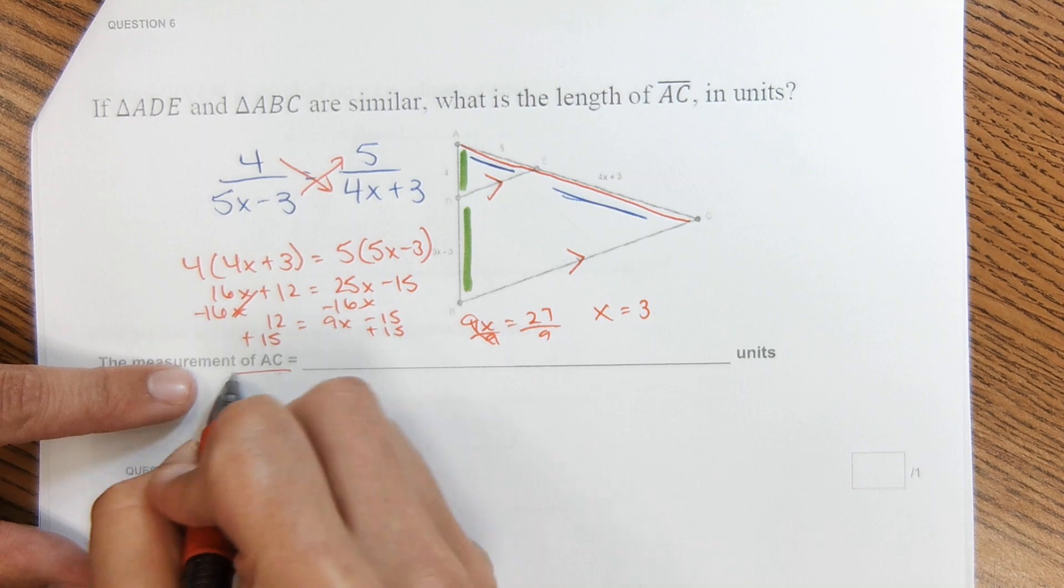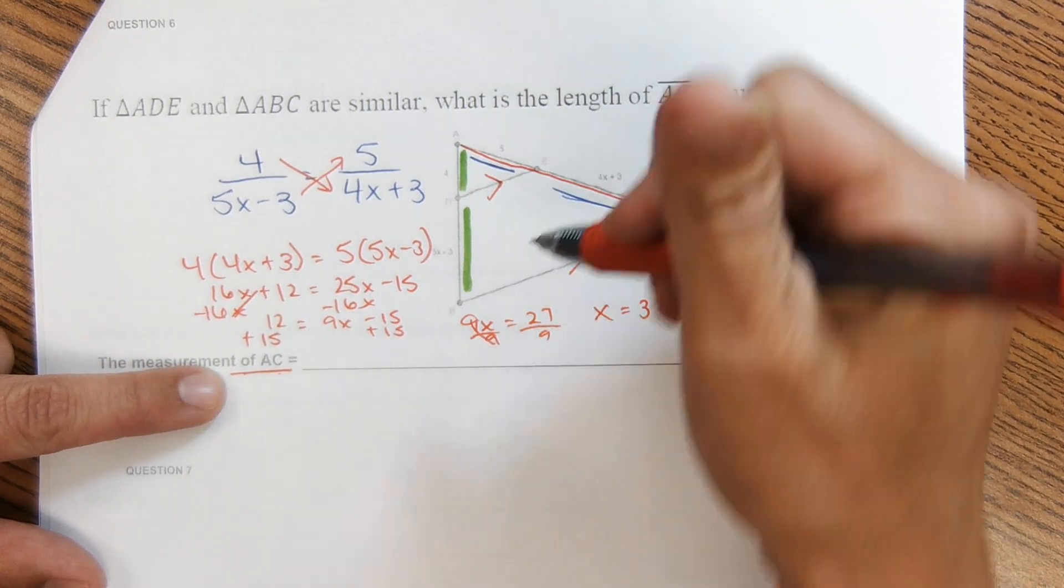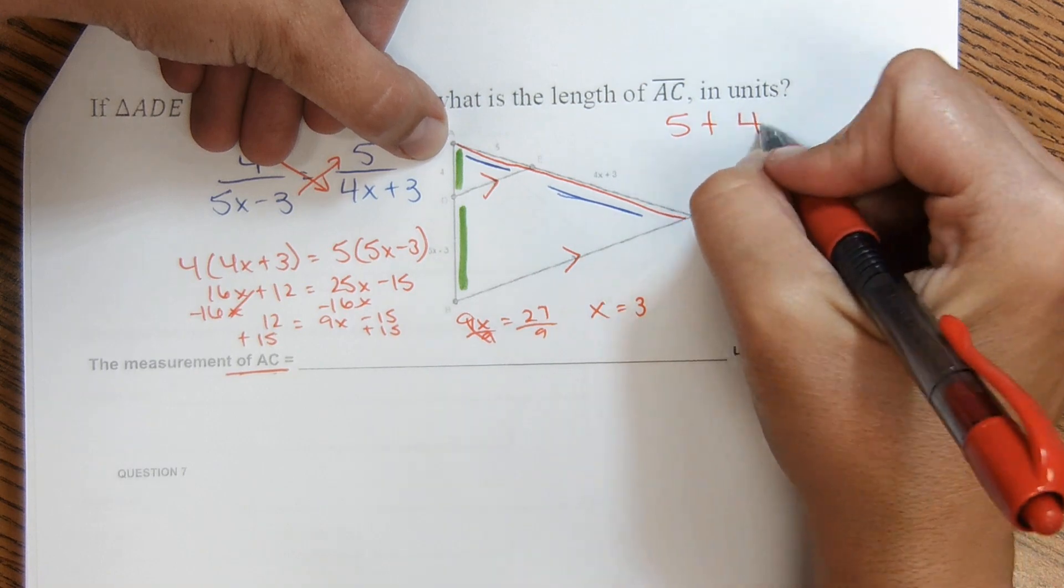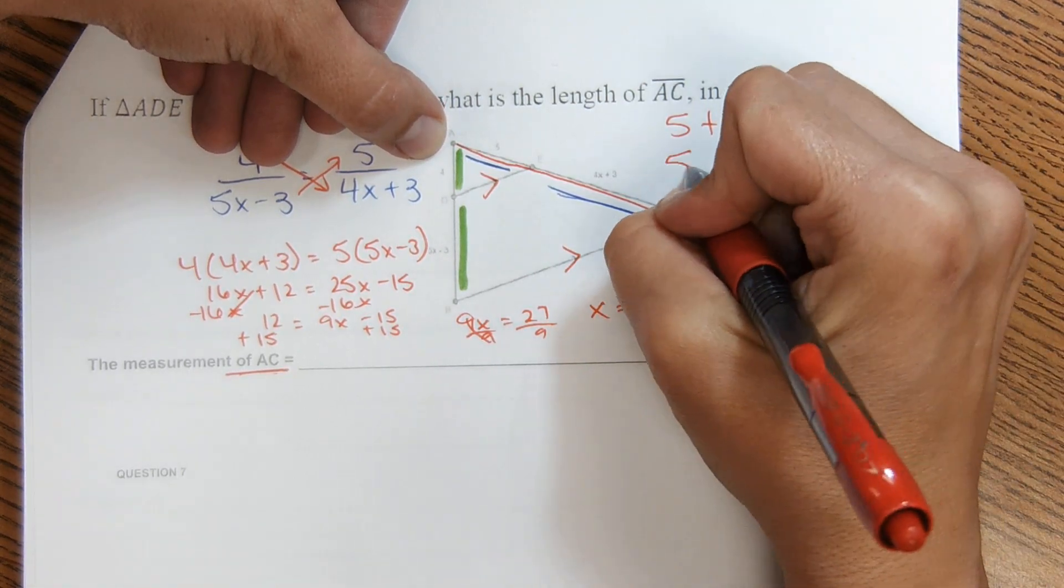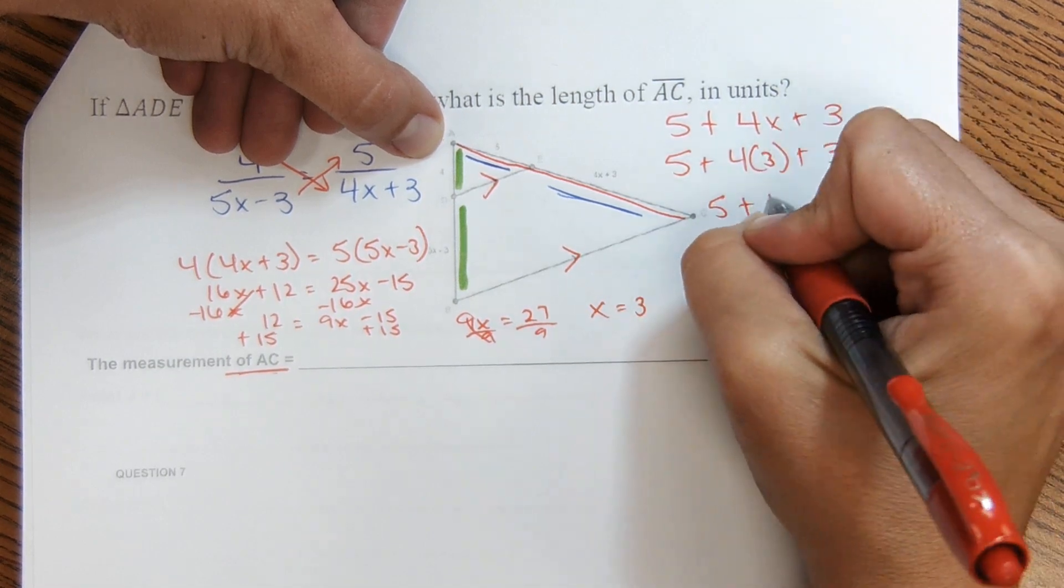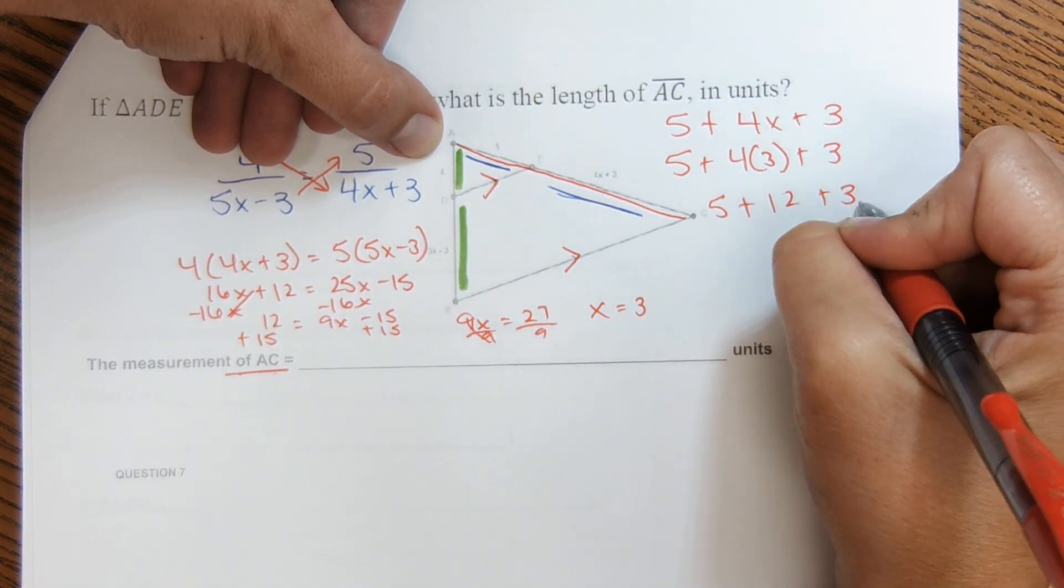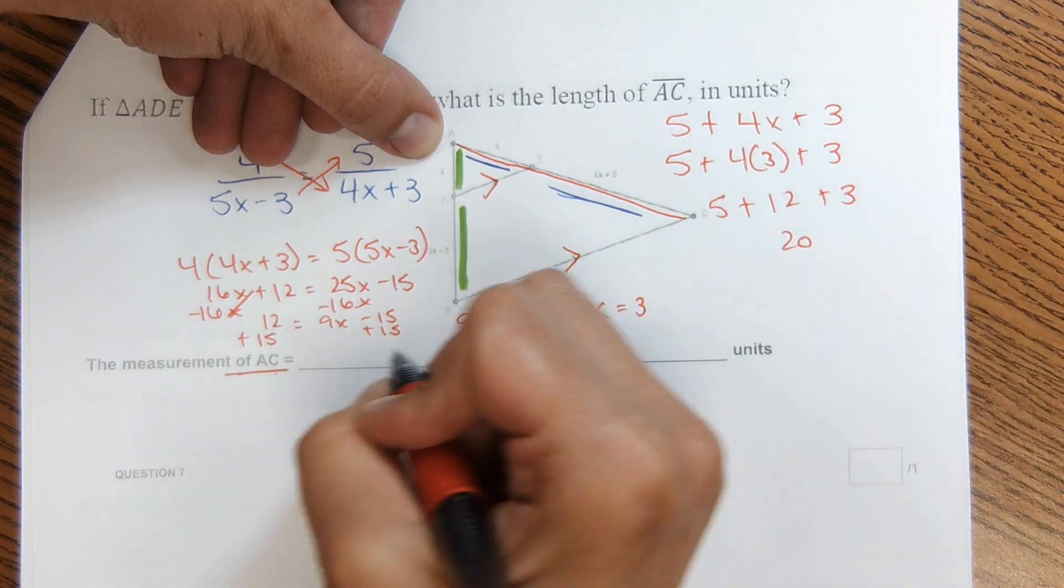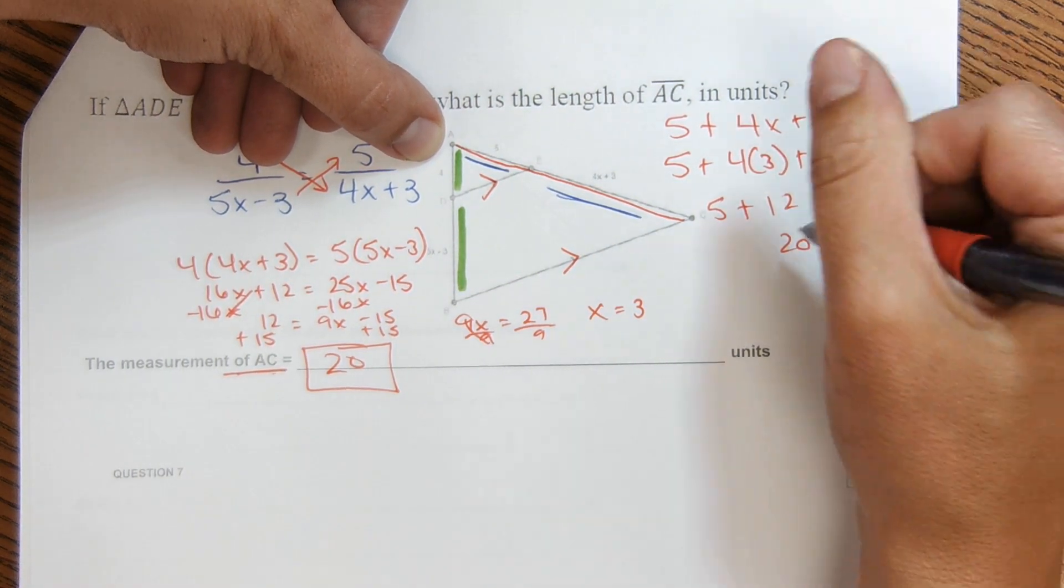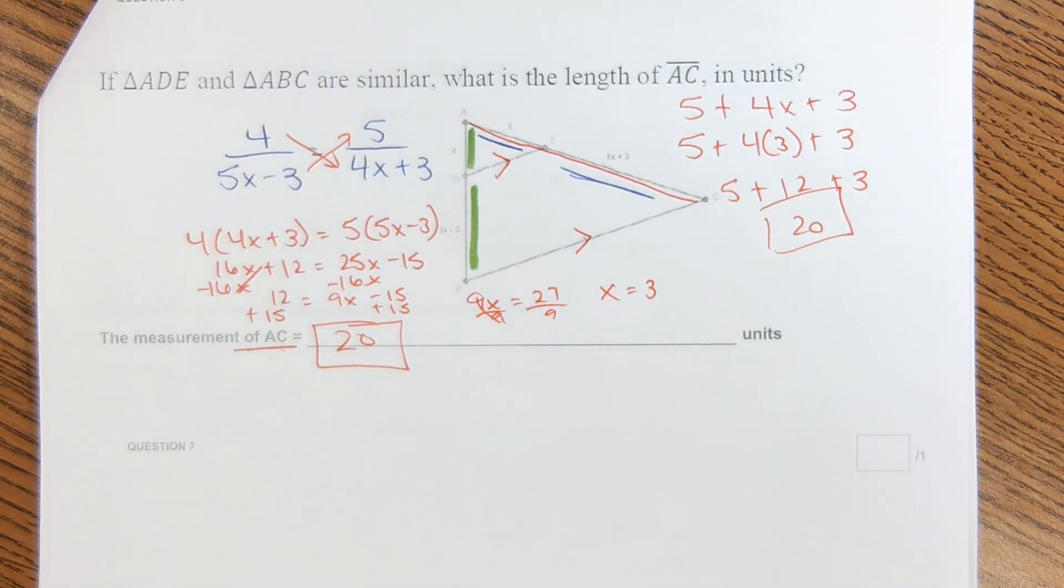But again, it doesn't want 3. It wants the measure of AC. So AC, it looks like it's 5 plus 4x plus 3. So I just need to plug in my value for x. 17 plus 3 is 20. So the measure of AC is 20. And that is the answer. Okay, next problem.